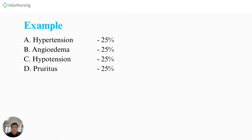Letter A: hypertension. Letter B: angioedema. Letter C: hypotension. Letter D: pruritus. You have four options and you always start with a 25% chance of getting the right answer. You do not start at zero. You have a 25% chance of getting the correct answer in every question given to you.